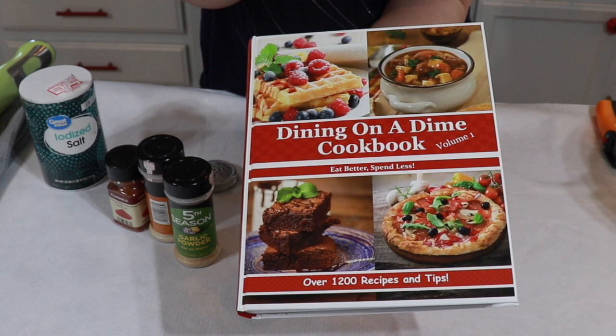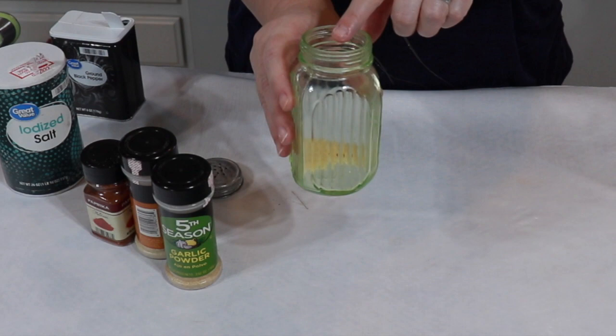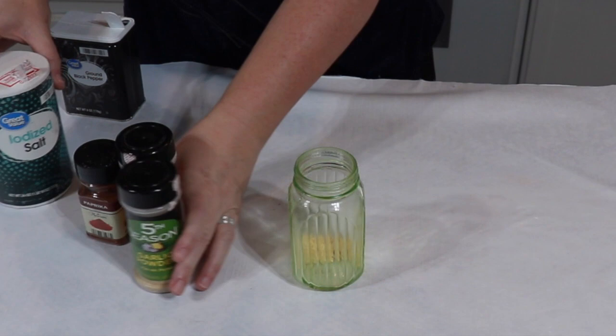You can vary the ingredients to whatever your family likes. I keep my salt shaker on the stove. So what I do is I put a few grains of rice in here to keep it from clumping.